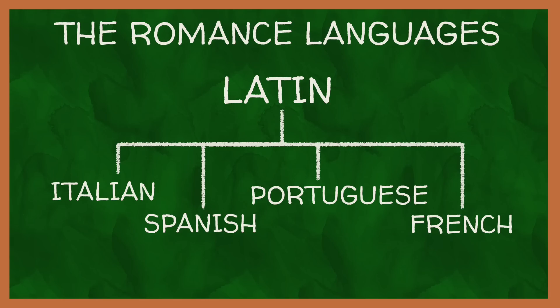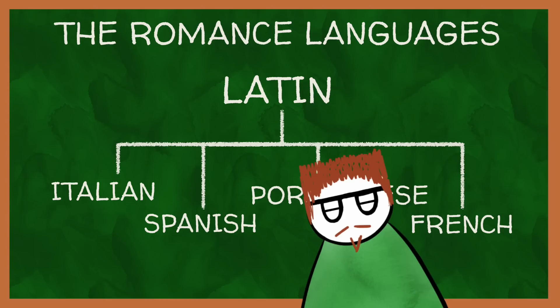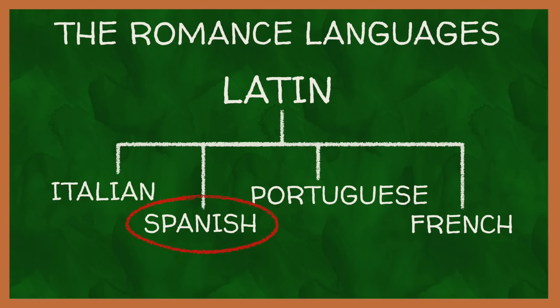The Romance languages are a family of languages which all derive from Latin. Due to this, they all have many things in common with one another in regards to how their words are spoken and written. They are obviously not identical — each have their own rules and quirks which make them unique. One of these unique quirks relates to the Romance language of Spanish and its aversion to one particular letter.